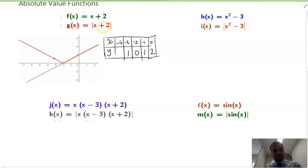And negative 4 plus 2. Negative 4 plus 2 is negative 2. But the absolute value of that is 2. And that's this point right there.